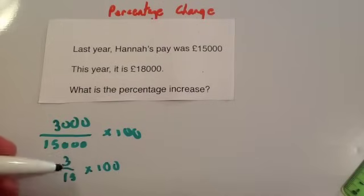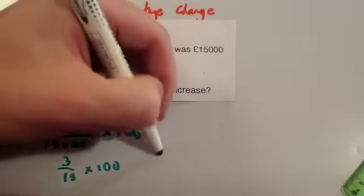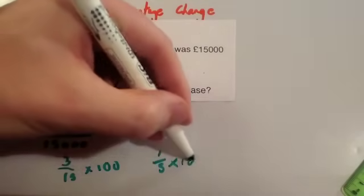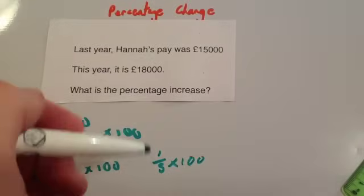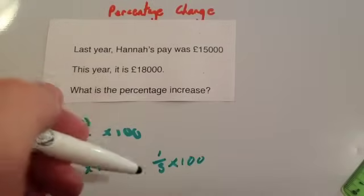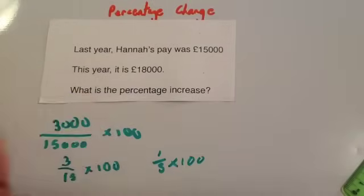And then 3 over 15, you can cancel that down to become 1 over 5 times 100. Whenever you're doing a fraction times 100 or like a fifth times 100, I would just work out what a fifth of 100 is. And that's 20. So the answer is 20%.